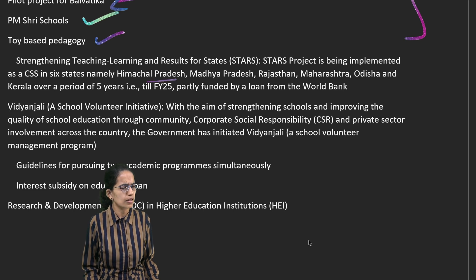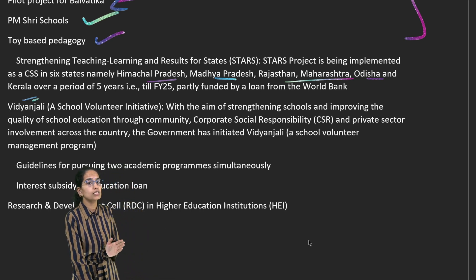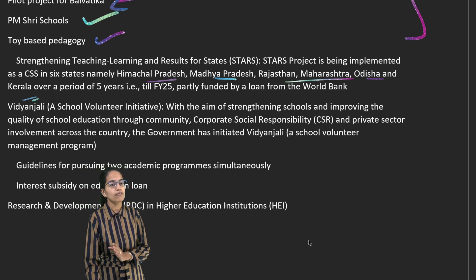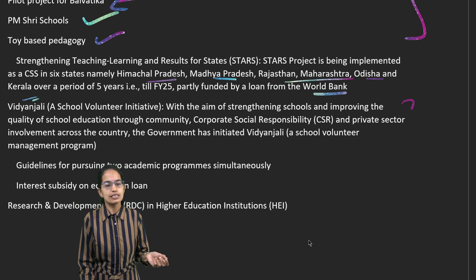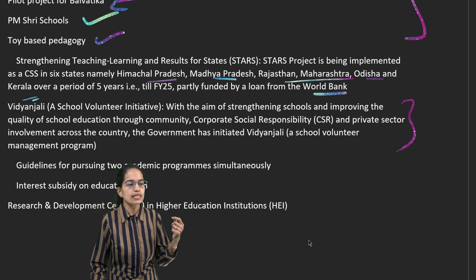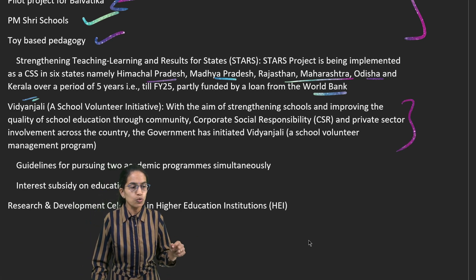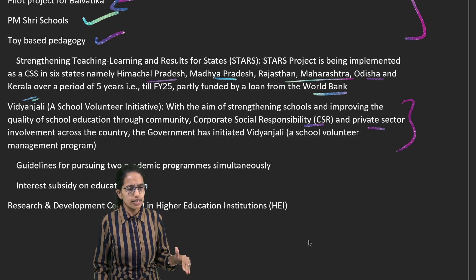The STARS scheme has been implemented in Himachal Pradesh, Madhya Pradesh, Rajasthan, Maharashtra, Odisha, and Kerala for a period of five years until 2025, funded by the World Bank. There is also the Vidyanjali scheme, which is a student-school volunteer initiative involving CSR participation and the private sector.